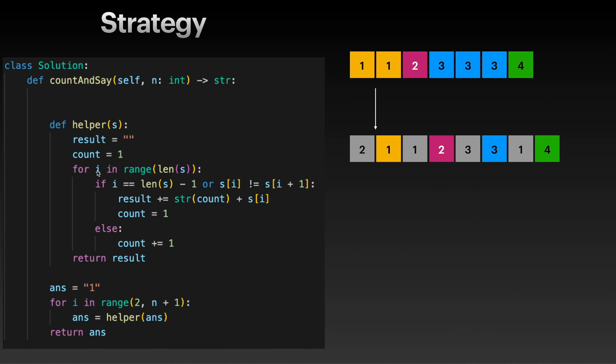This condition is only for when we are on the last index, so i equals len(s) - 1. And for this part, s[i] - so s[1], is that equal to s[2]? No, they are not the same, so we are in this if statement.